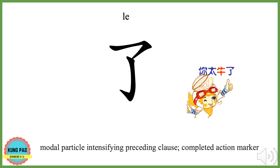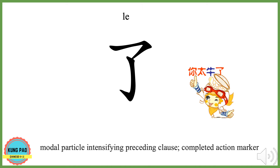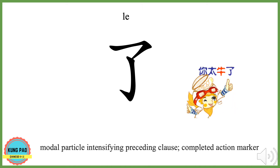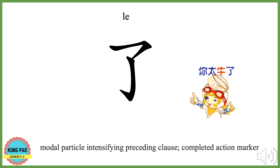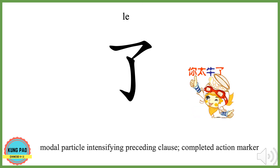了 (le) is a modal particle that intensifies the preceding clause. It is also a completed action marker.